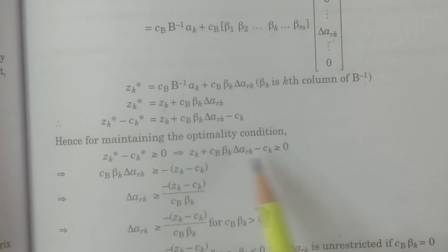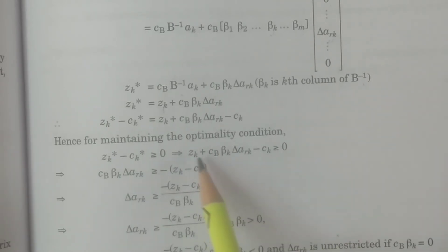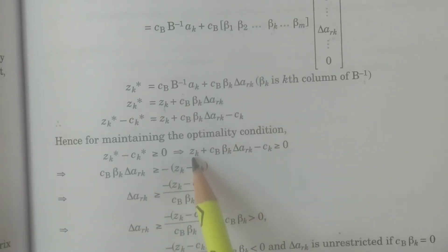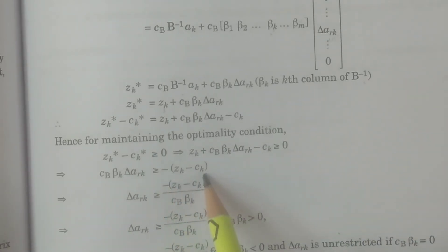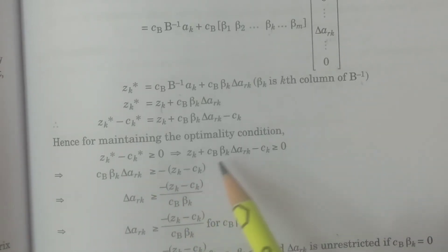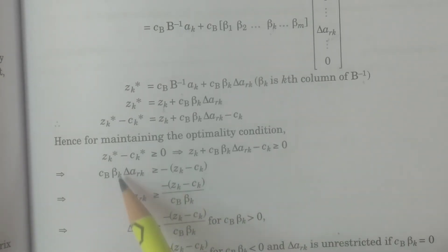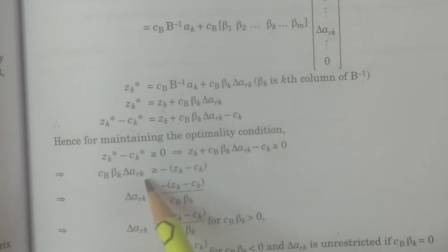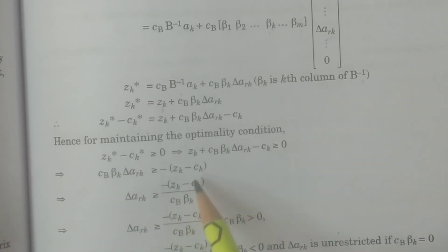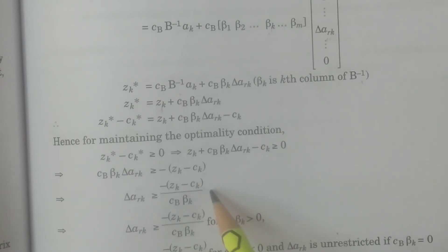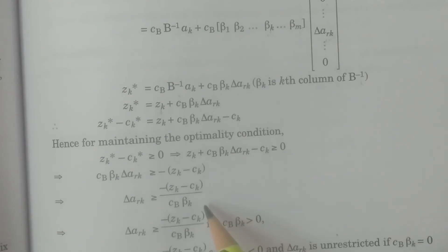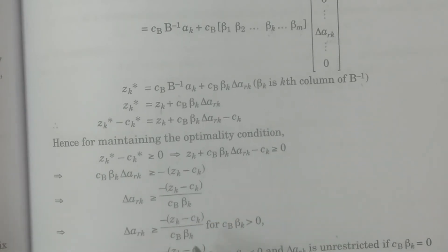So zk plus cb times beta-k times delta-ark minus ck is greater than or equal to zero. Rearranging: cb times beta-k times delta-ark is greater than or equal to ck minus zk, which equals minus(zk minus ck). Since zk minus ck is the net evaluation of the kth vector, the condition on delta-ark is: delta-ark is greater than or equal to minus(zk minus ck) divided by cb times beta-k.